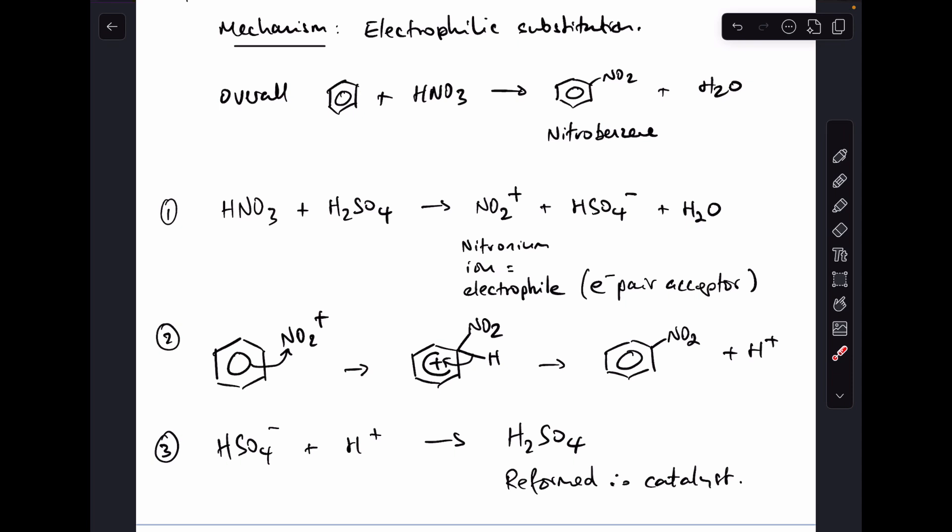And then the final thing we do is show the H2SO4 acting as a catalyst. So we need to reform it, and that's done by this equation here. We take the HSO4- ion that was formed in the first step, the H+ ion that's just been formed in the second step, bring them together, and we get our H2SO4 back. Moving on to the other reaction now.